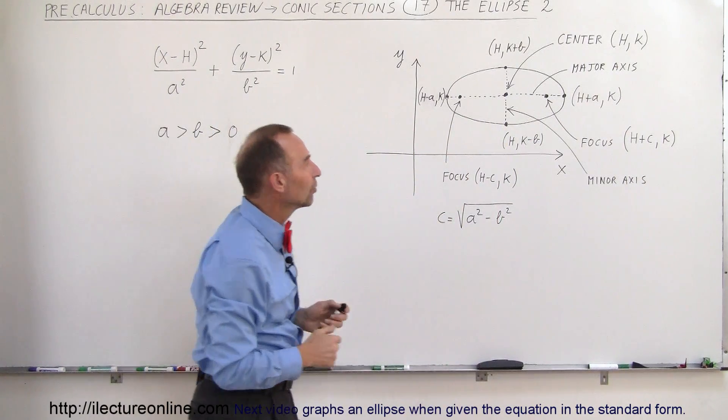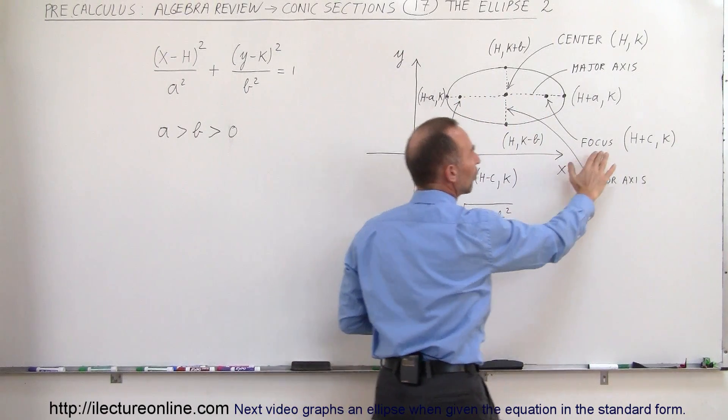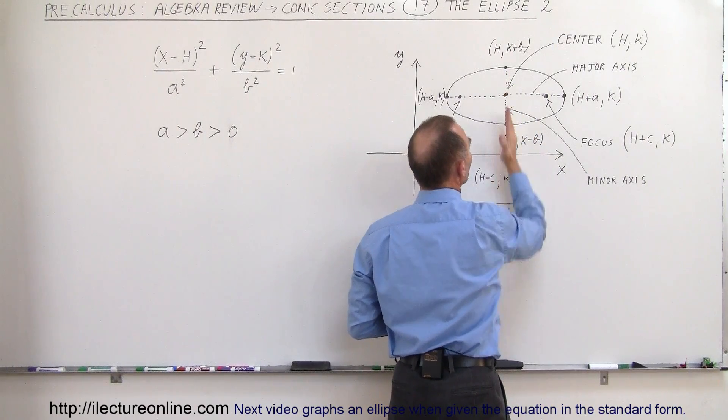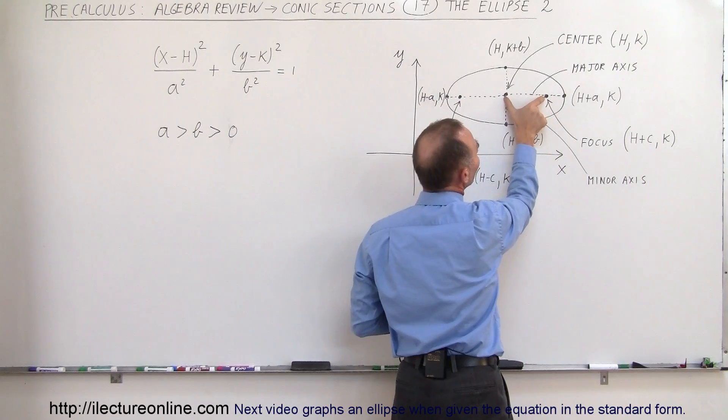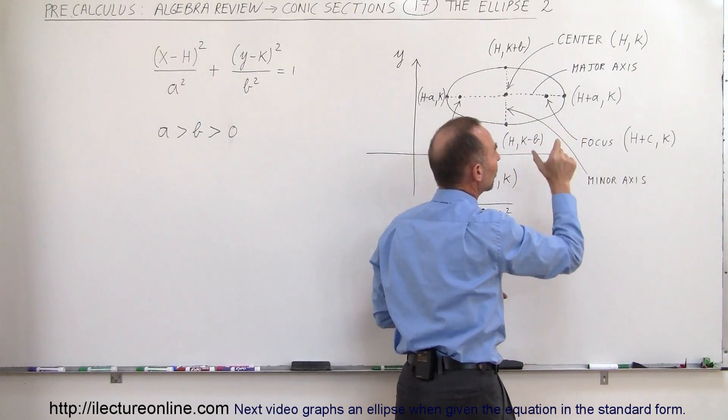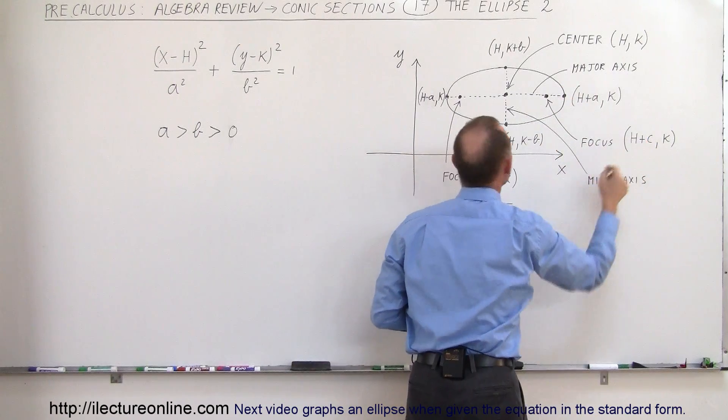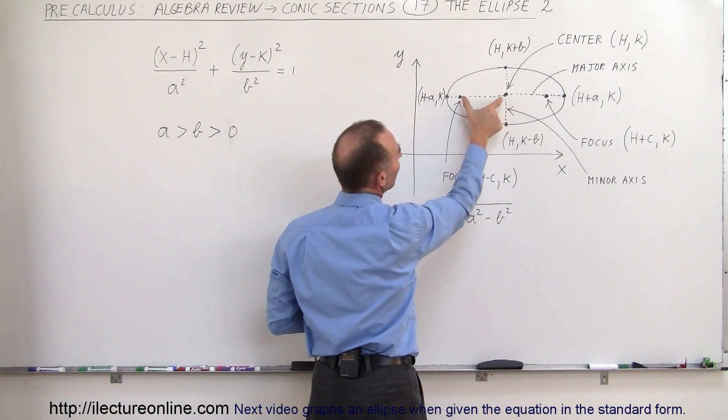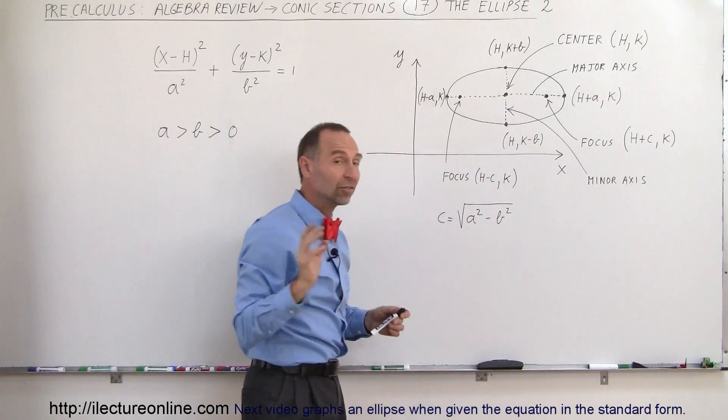Now, the ellipse also has foci. So there's the focus on the left, there's the focus on the right. And the position of the focus can be found by taking h, which is the x coordinate of the center, plus c. This distance here is c, and we'll get in a moment just what c is. And of course, the vertical distance, that still would be k. And over here, this focus is (h-c, k). This distance here is c, and k would be the y coordinate at that location.